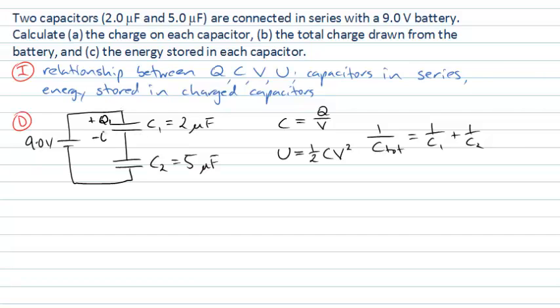So on this other side, it must have a charge minus Q1. If we look at capacitor 2, which is connected to the negative side of the battery, it must have a charge minus Q2, and its opposite plate must be plus Q2.